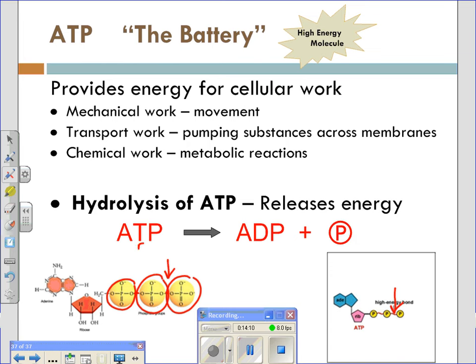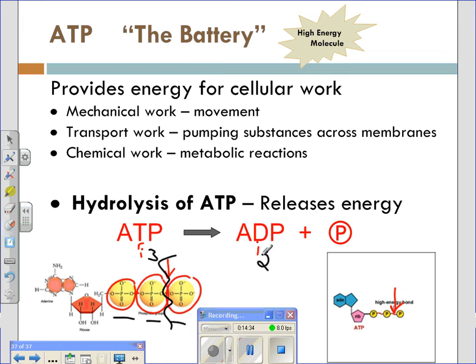The ATP molecule has a very high energy bond between the last two phosphate molecules. Zooming in, we have three phosphate molecules — the bonds that hold them together have energy stored inside, and this bond is a very high energy bond. Adenosine triphosphate — tri means three — has these three phosphate molecules. If we break off this last phosphate molecule to do cellular work, now we have adenosine diphosphate. Di means two. So you have your two phosphate molecules, and that last phosphate is broken off to release energy for cellular work.